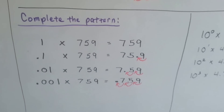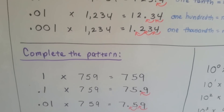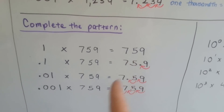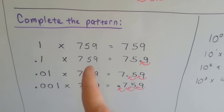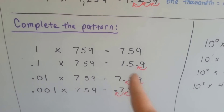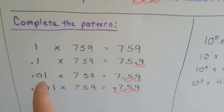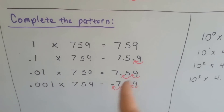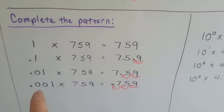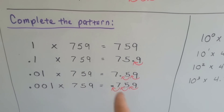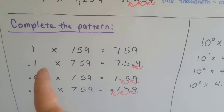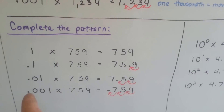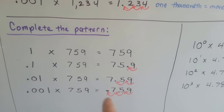So, to complete this pattern, we have the decimal on the left, which means the decimal point is going to move left. One times seven hundred fifty-nine is still seven hundred fifty-nine. A tenth times seven hundred fifty-nine becomes seventy-five and nine-tenths. One hundredth times seven hundred fifty-nine becomes seven and fifty-nine hundredths. One thousandth times seven hundred fifty-nine becomes seven hundred fifty-nine thousandths. So as the decimal point moved one, two, three times on this side, in the answer it also moved one, two, three times.